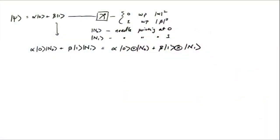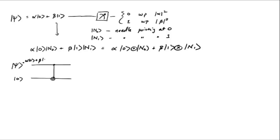So how could it be that this qubit got entangled with the needle? Here's one way to think about it. Let's say this is our qubit psi = alpha|0⟩ plus beta|1⟩, and we have one more qubit in the state |0⟩ and we want to entangle them. We can do a CNOT gate. The input was alpha|0⟩ plus beta|1⟩, and the output is alpha|00⟩ plus beta|11⟩.